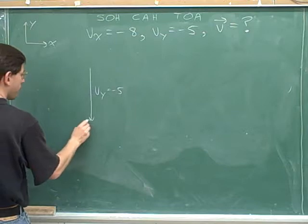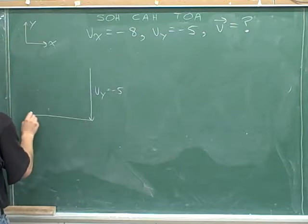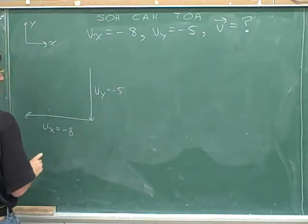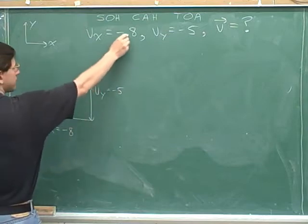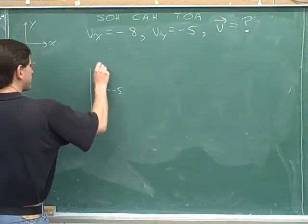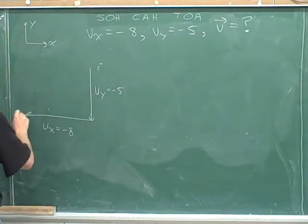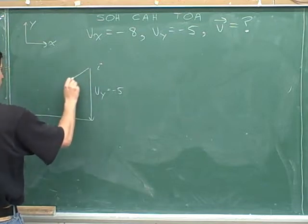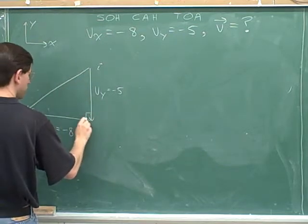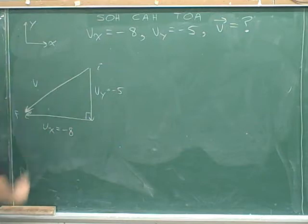Now we have to draw the x component. That's pointing to the left, because the x component is negative and the positive direction is to the left. Now we have to draw the overall vector. The overall vector should start at this initial point and end up at this final point. Let's label that as our overall vector.